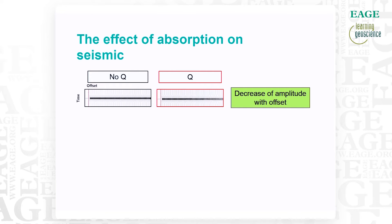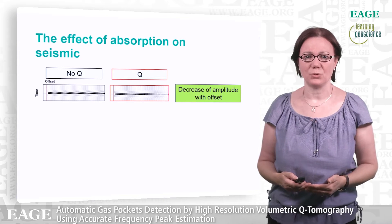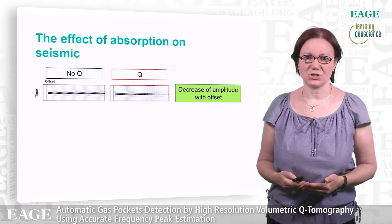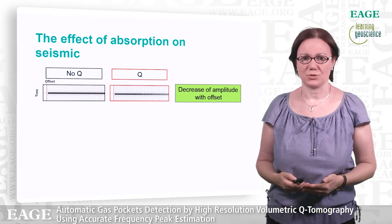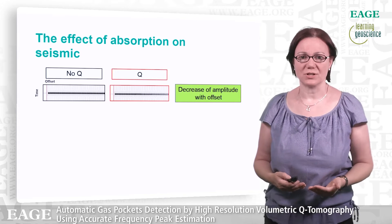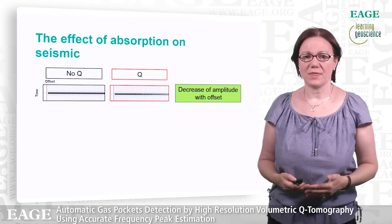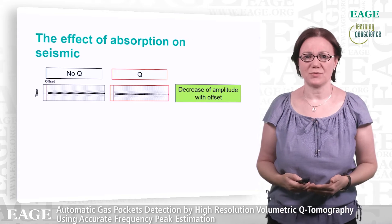As a reminder, let's see with a simple example the effects of absorption on seismics. Here we have two synthetic gathers, both without any AVU and stretch effect. The red gather is affected by absorption. We can see a change in wavelet shape with offset, and the amplitude is decreasing over offset.